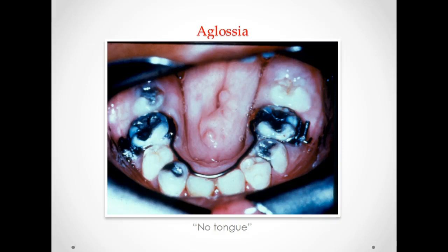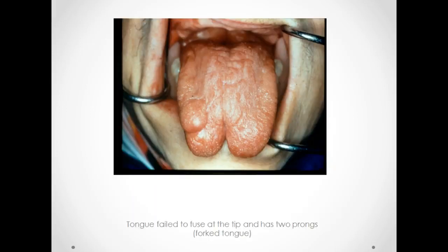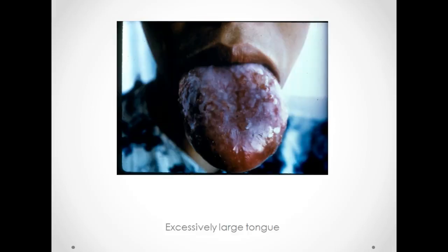This image shows aglossia, which is no tongue. This is a picture of a bifid tongue, or forked tongue — the tongue failed to fuse at the tip and has two prongs. This image shows macroglossia, or an excessively large tongue.